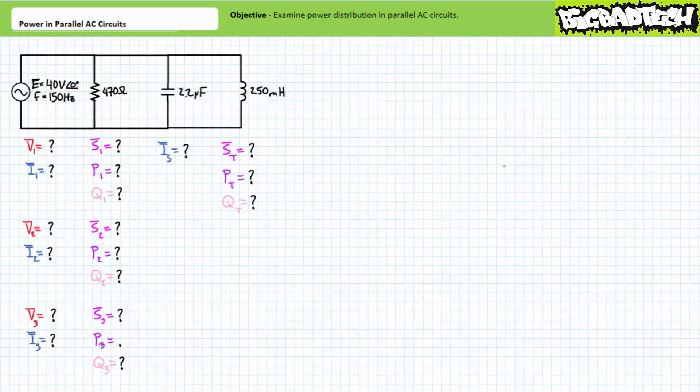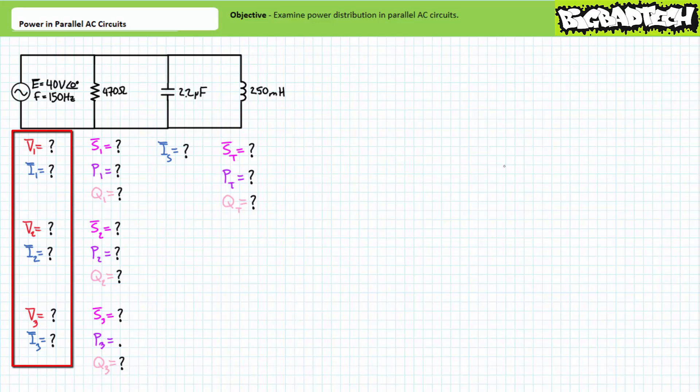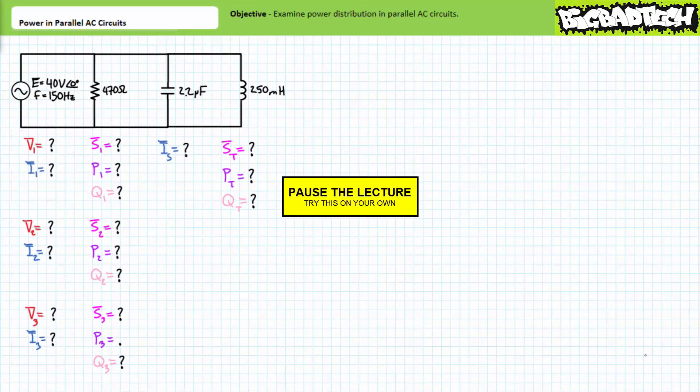Our second illustrated example problem features a parallel combination of three elements. The first element is a 470 ohm resistor, the second element is a 2.2 microfarad capacitor, and the third element is a 250 millihenry inductor. The source has an effective value of 40 volts and an excitation frequency of 150 hertz. Stage one necessitates we solve for the voltage drop across each element, the current through each element, and the source current. Once we have these values, we'll move on to stage two and examine power distribution within this parallel circuit. By all means, pause the lecture and try stage one on your own.